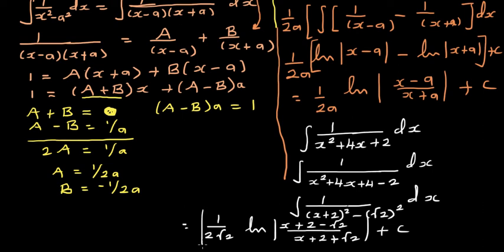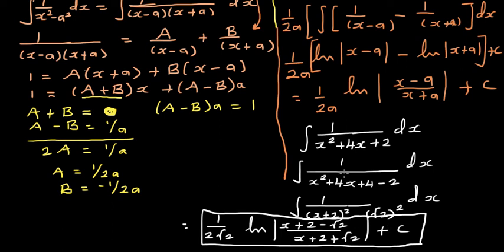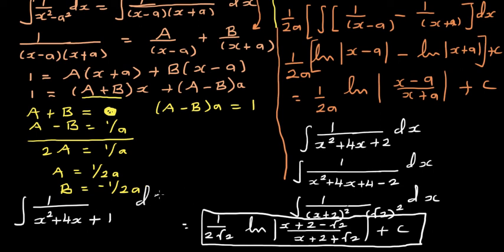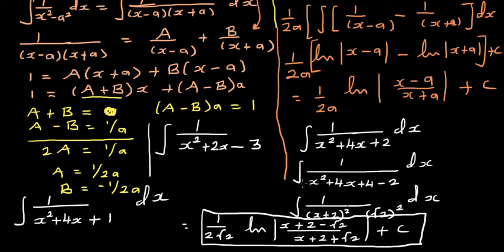You can confirm this answer by differentiating it to get back 1 over x squared plus 4x plus 2. For practice, try integrating 1 over x squared plus 4x plus 5 dx, and also 1 over x squared plus 2x minus 3 dx. For both, complete the square to write them in the required form and then apply the formula.